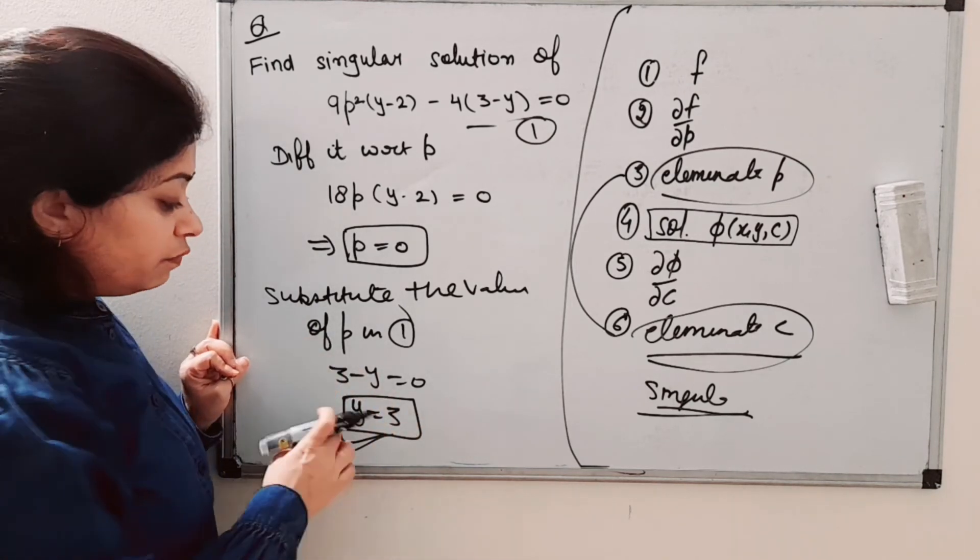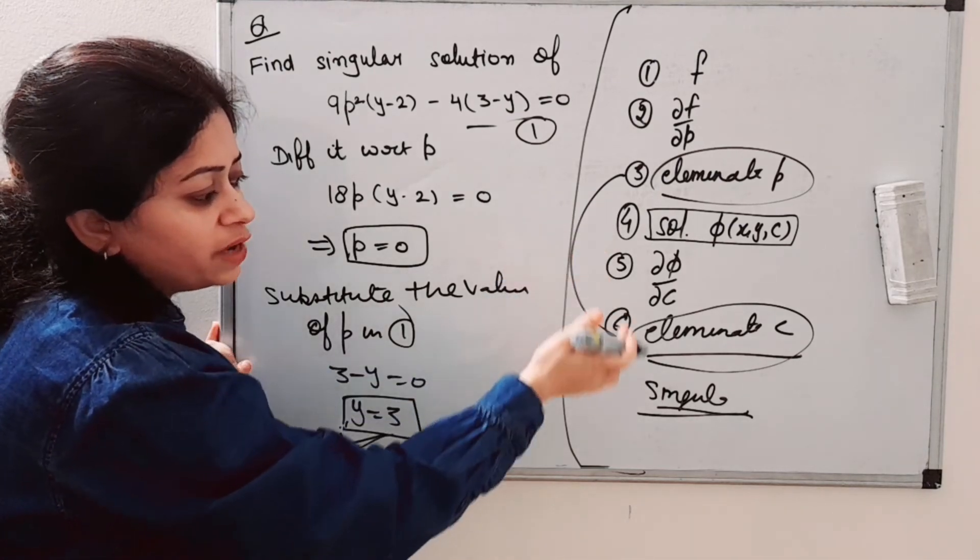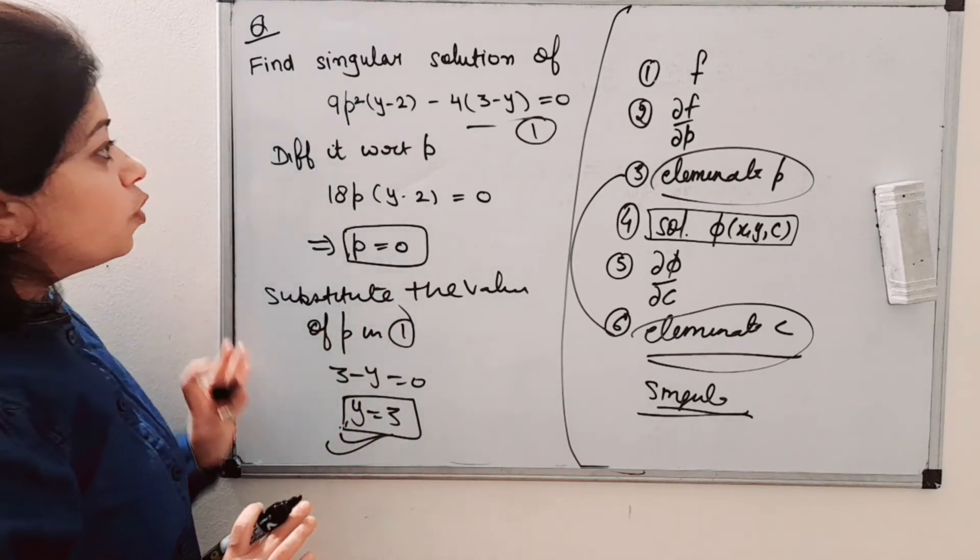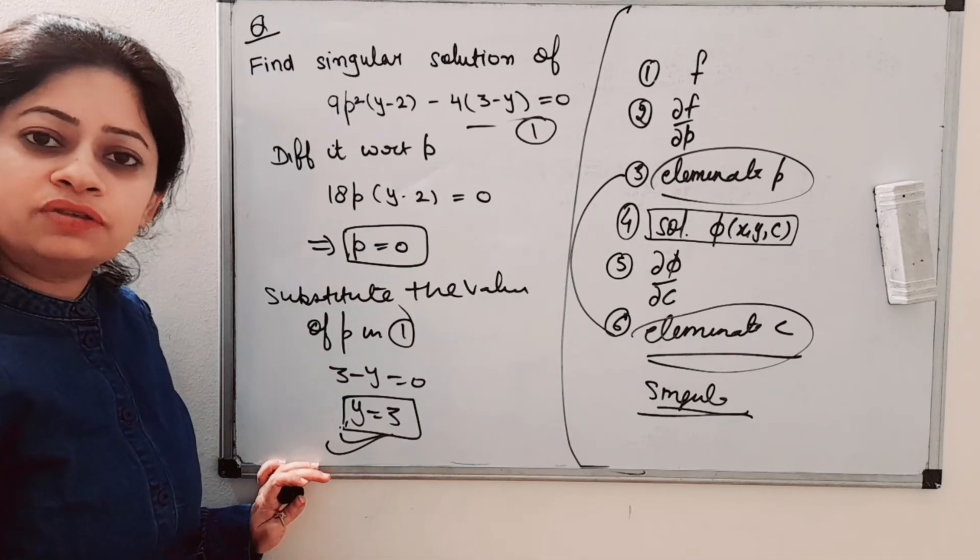If we get two or more solutions, then we move to steps 4, 5, 6, and then the common solution between equations 3 and 6 is the singular solution. I hope you understand what a singular solution is and the method of finding it.